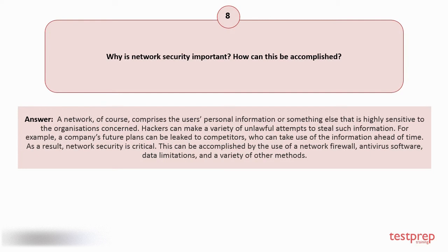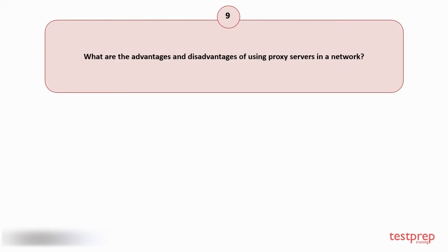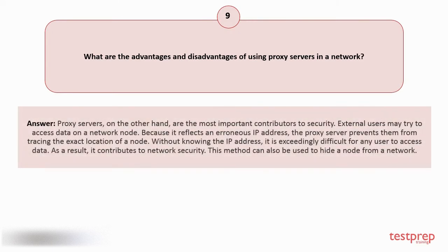Question number nine: What are the advantages and disadvantages of using proxy servers in a network? Your answer is: Proxy servers are the most important contributors to security. External users may try to access data on a network node, but the proxy server prevents them from tracing the exact location of a node. Without knowing the IP address, it is exceedingly difficult for any user to access data, contributing to network security. This method can also be used to hide a node from a network.